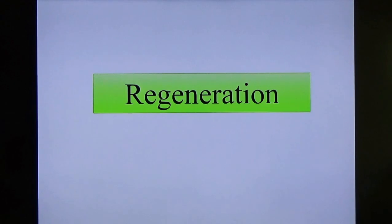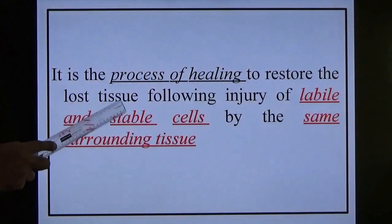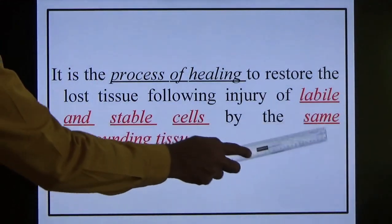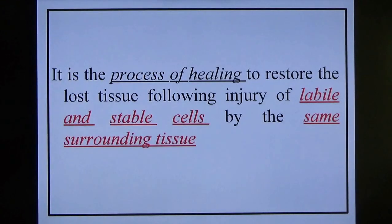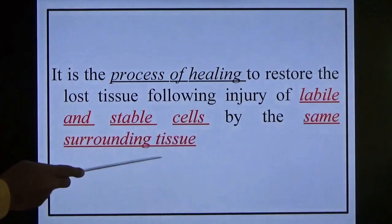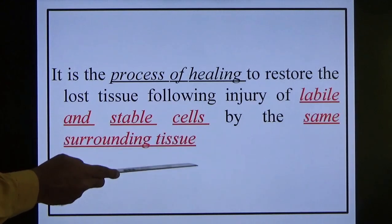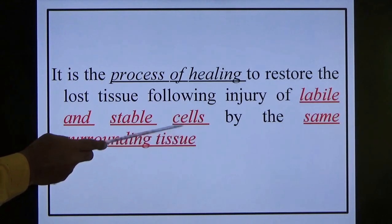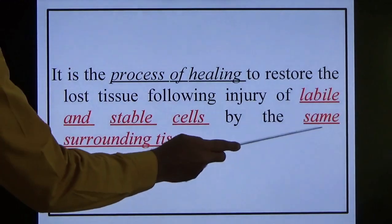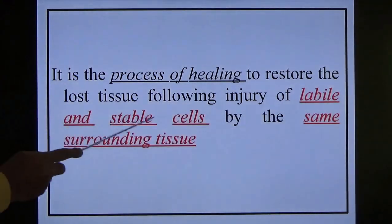Now regeneration: it is a process of healing to restore lost tissue following injury of labile and stable cells by the same surrounding tissue. Restoration occurs in labile and stable cells by the same surrounding tissue. There are four types of tissue — epithelial, muscular, nervous, connective tissue. Injury to any part: the same type of healing takes place by the same surrounding tissue — this is known as regeneration. But it occurs only in labile and stable cells.